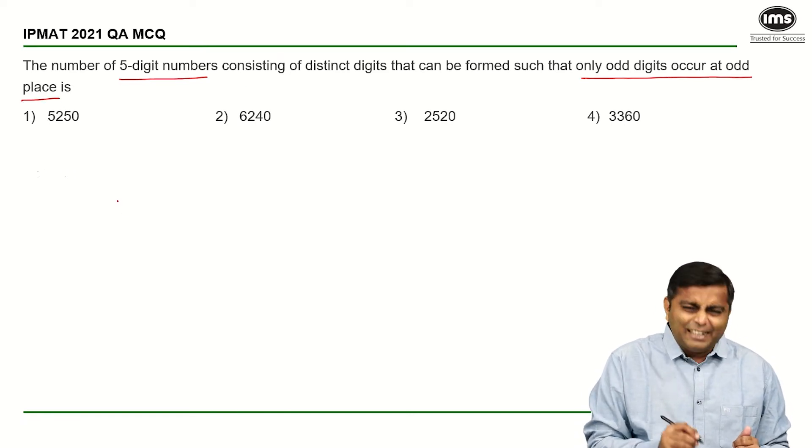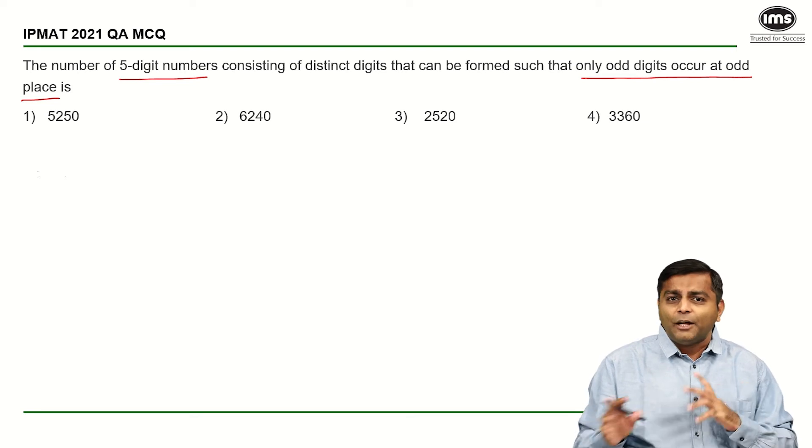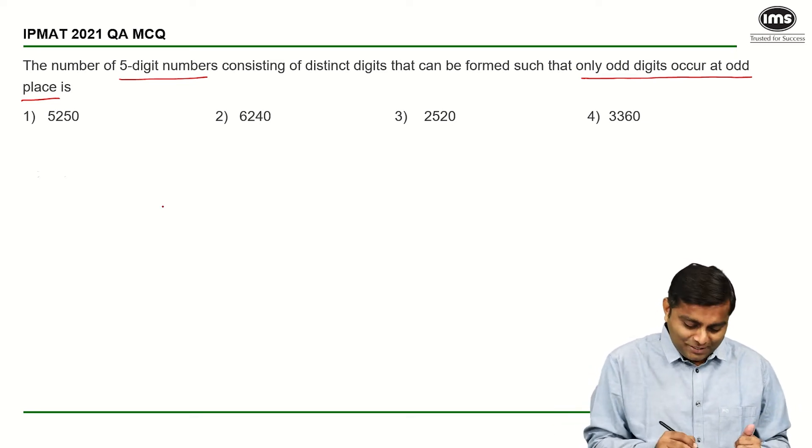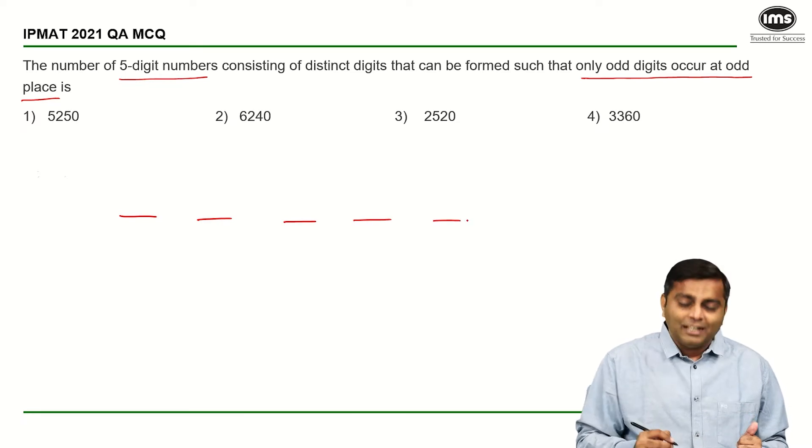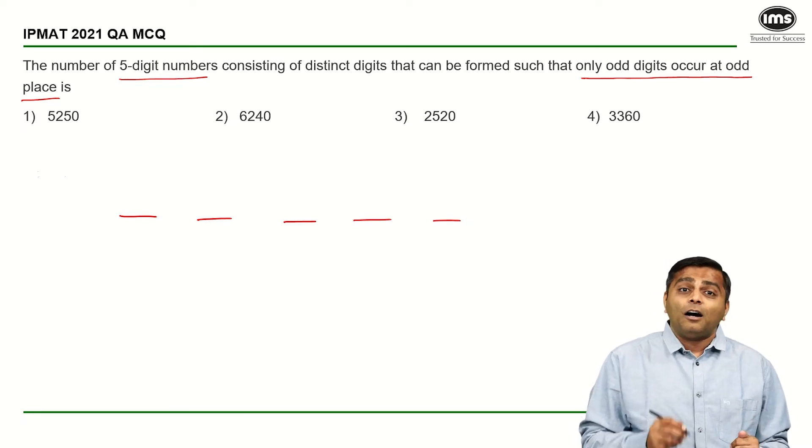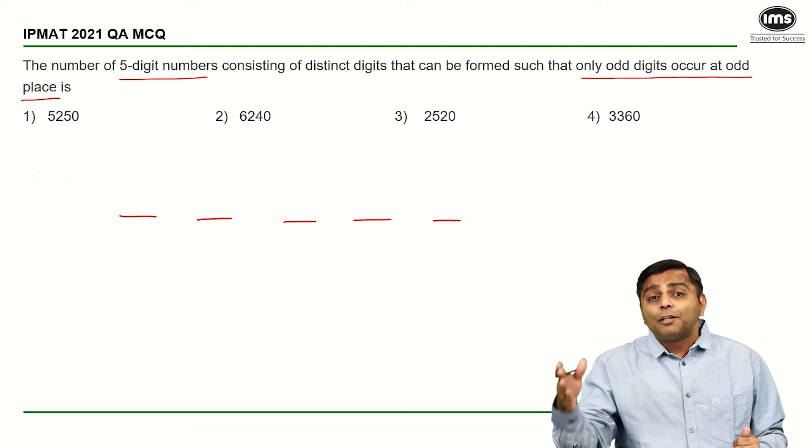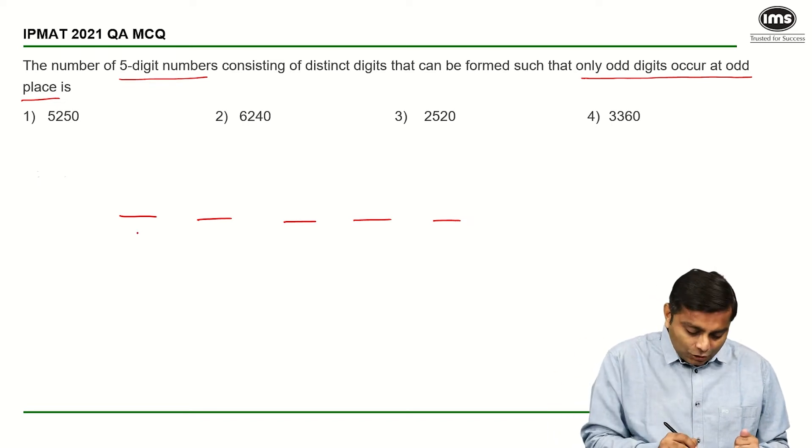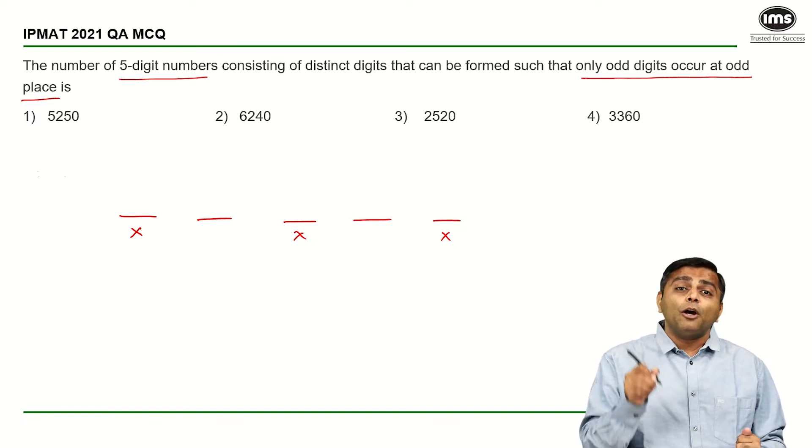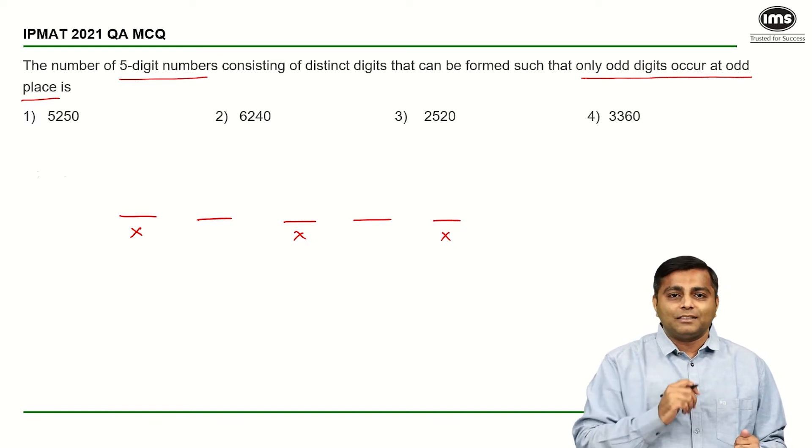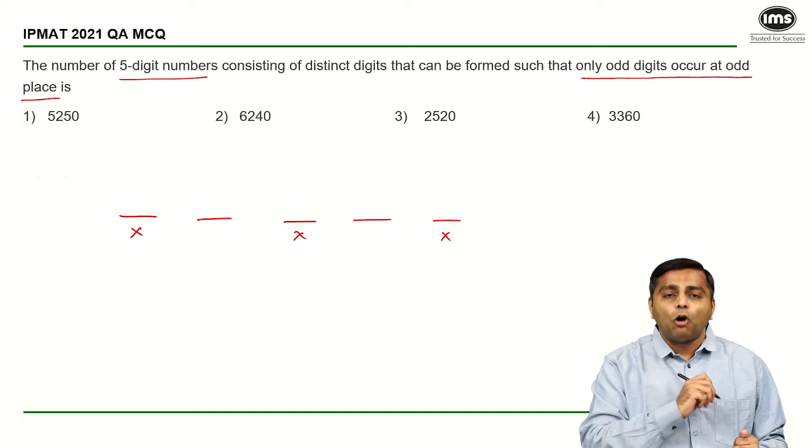Okay, so let's start with the most typical, most traditional method for solving. I don't really know any rocket science for this question. So 1, 2, 3, 4, and 5. These are my 5 digits. First place, third place, and the fifth place are our odd places. So for these places they have specified the constraints. What are those constraints? That only odd digits can take up the odd places.